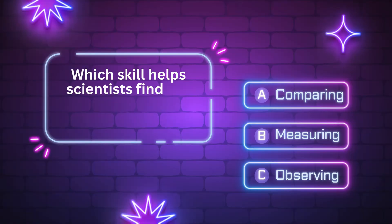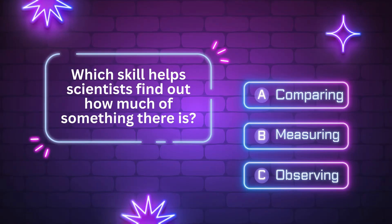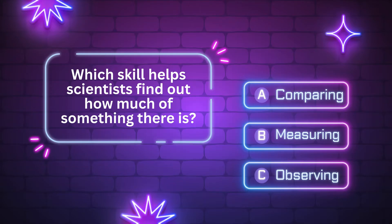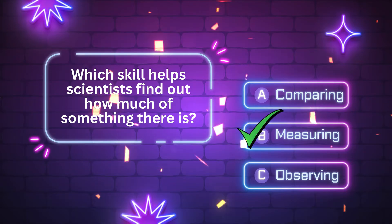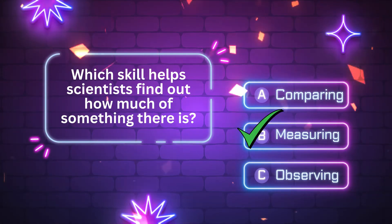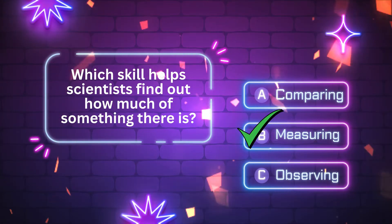Which skill helps scientists find out how much of something there is? A. Comparing. B. Measuring. C. Observing. The answer is letter B. Measuring. Good job. Let's move on to the next question.